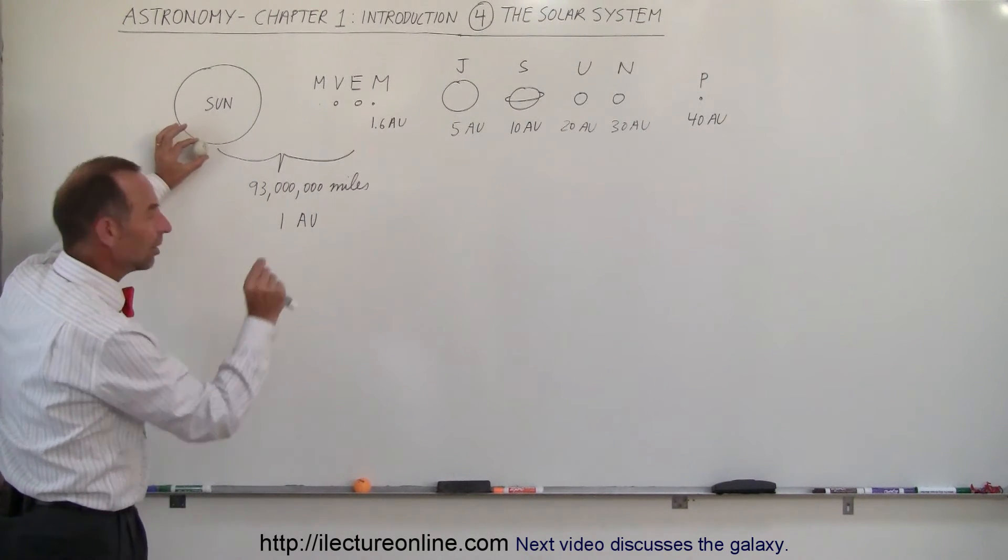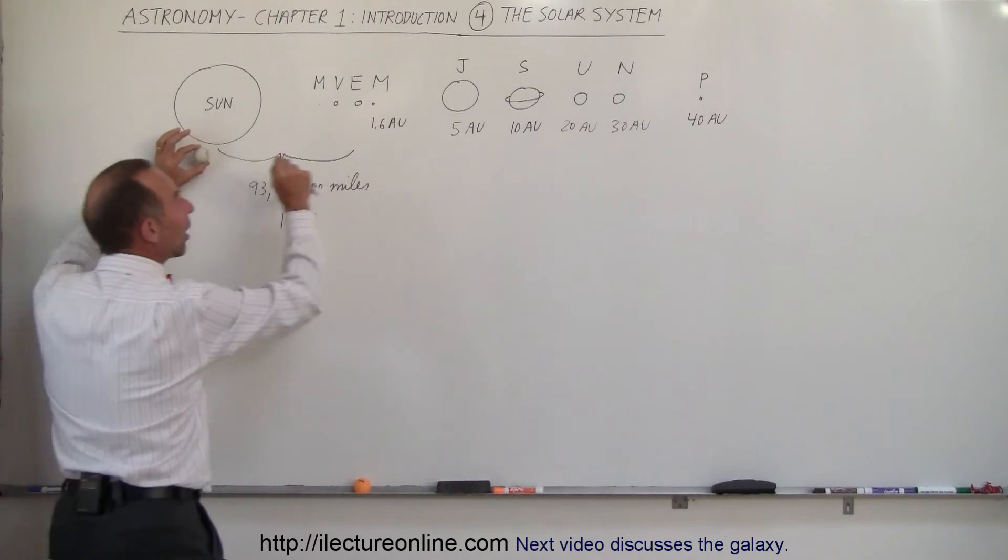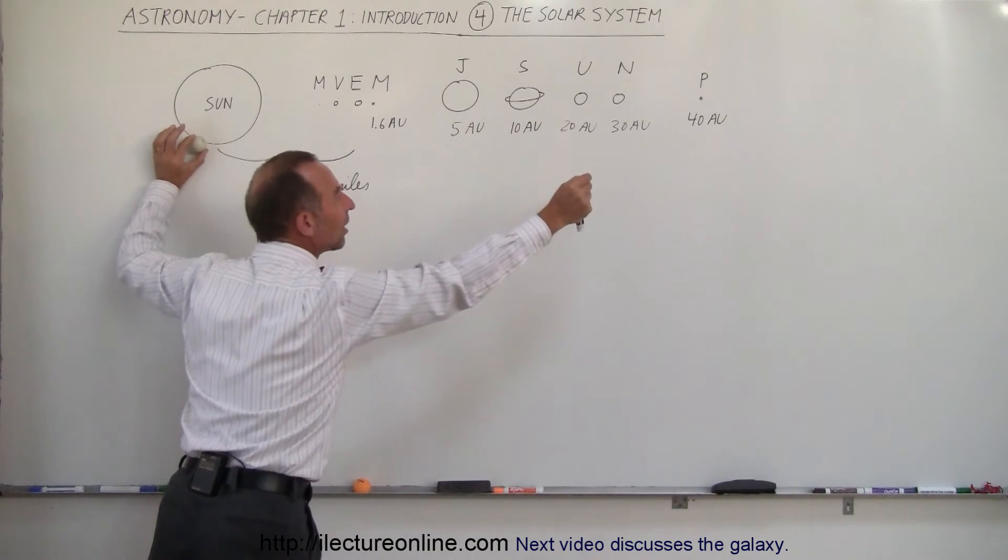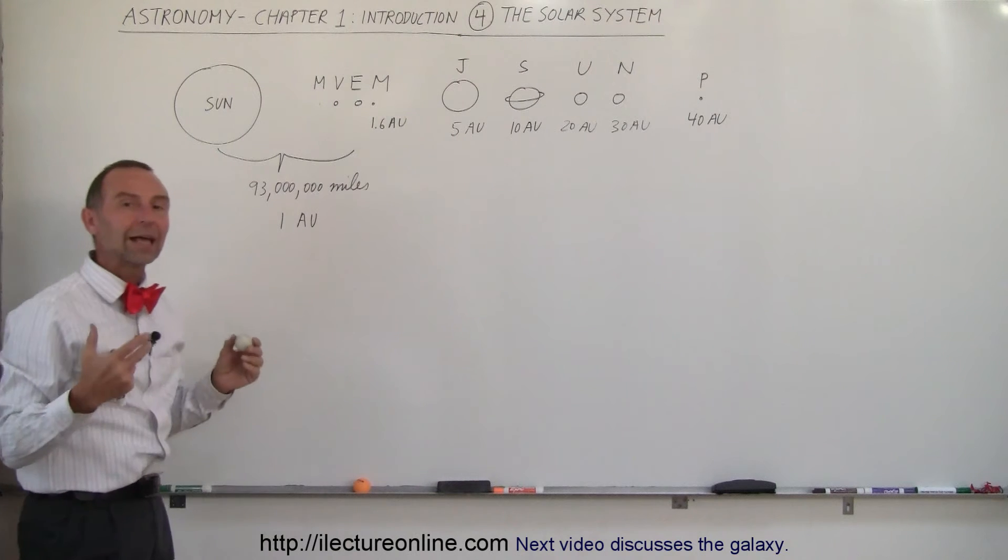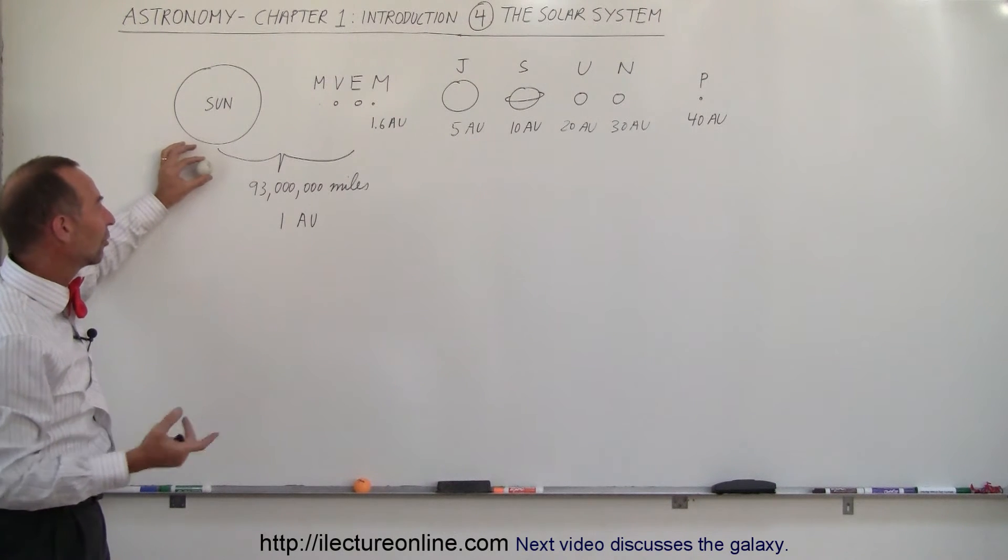Imagine, here's the Sun. There's a grain of sand. Walk 100 feet away and place it there. That would be the size of the Earth at about the approximate distance from the Sun.